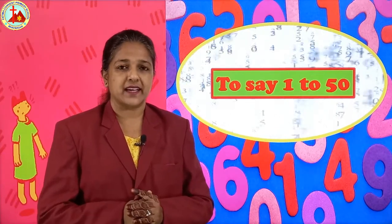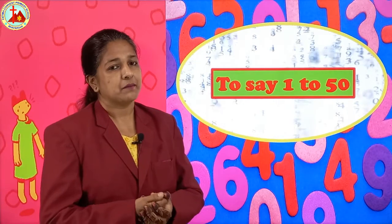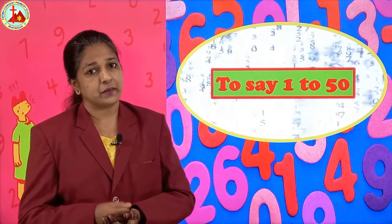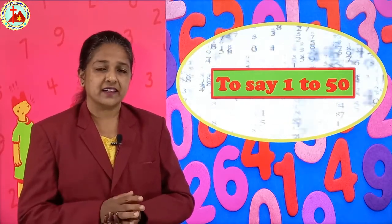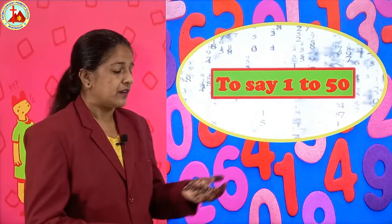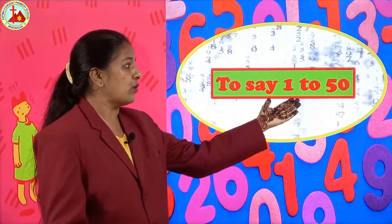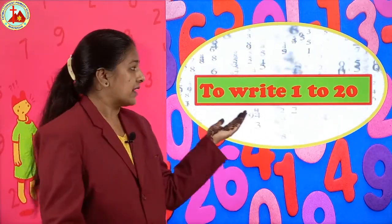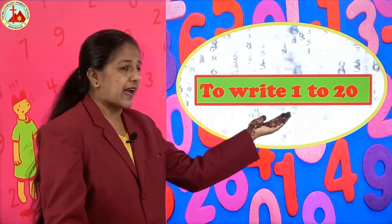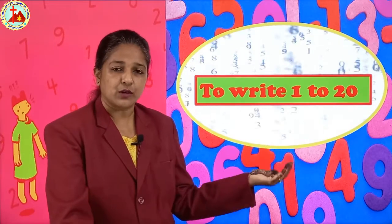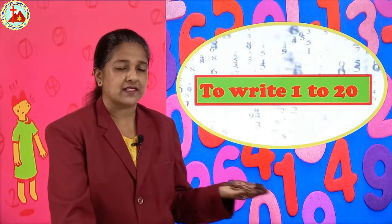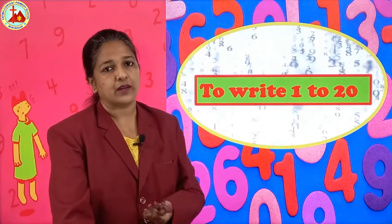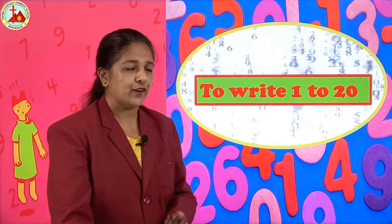So sit straight, sit properly and follow how miss is making you say. Say and repeat according to miss. You all have already learned it, so you all just have to repeat it. Today we will learn to say 1 to 50. Next, our topic is to write 1 to 20. This also you all have learnt in nursery class. So today we will write 1 to 20 and we will say 1 to 50. So be ready all of you.